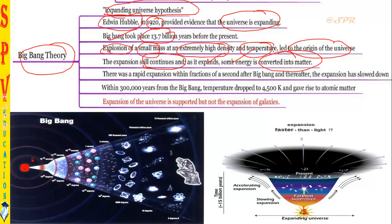There was a rapid expansion within a fraction of a second after the Big Bang, which greatly slowed over time. Within 300,000 years from the Big Bang, the temperature dropped to around 4,500 Kelvins, with particles slowly forming as the universe expanded. Importantly, the Big Bang theory is about the expansion of the whole universe — it does not link to the expansion of individual galaxies.